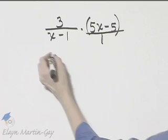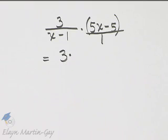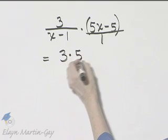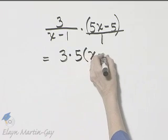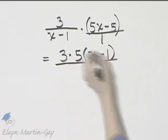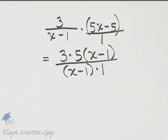And how do we multiply? Numerator times numerator. And if you don't mind, at the same time, I'm going to go ahead and factor out the common factor of 5 here. So that will be 5 times x minus 1. But it's really numerator times numerator over denominator times denominator.